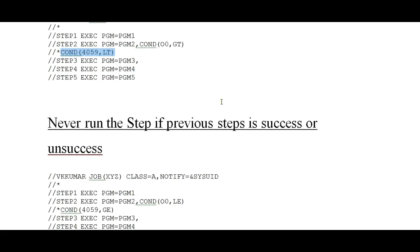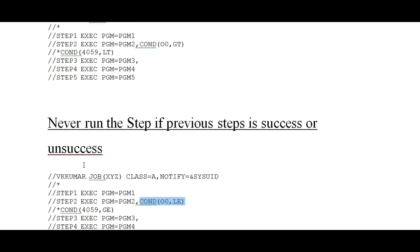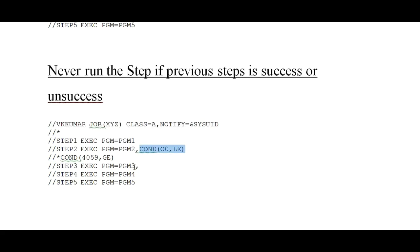The next scenario is: never run the step, whether the previous step is successful or unsuccessful. You simply don't want to run certain steps. For example, if you have 12 or 13 steps and as part of testing you only want to run step one and step five, just give the condition COND 00 LE, or you can give COND 4095 greater than. It simply bypasses those steps — they won't execute — and the remaining other steps will run. This is very helpful when testing a JCL with multiple steps.